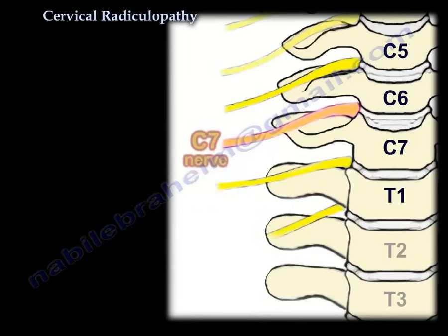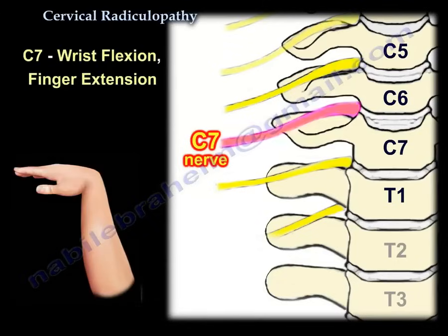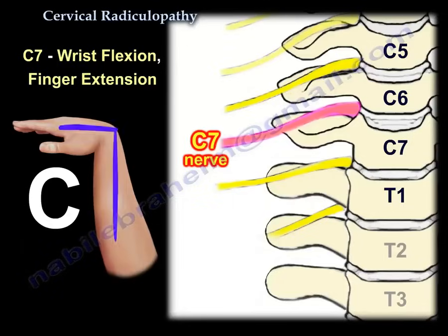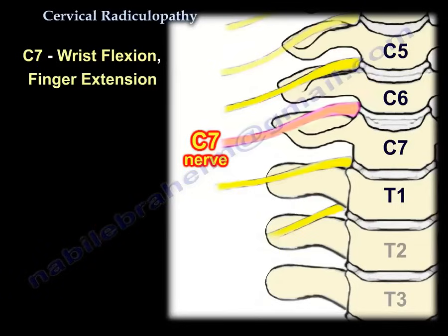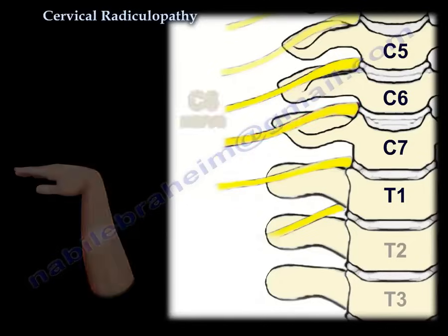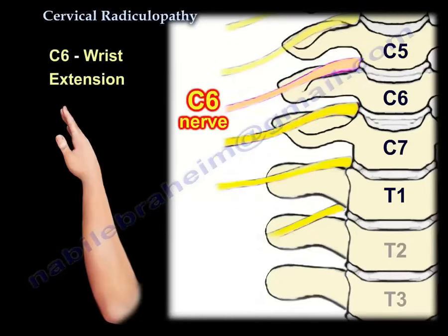Starting with C7: wrist flexion is C7. You can see the wrist is flexed and the finger is extended — it resembles the shape of a 7, which helps you remember it. If wrist flexion is C7, then wrist extension is C6.